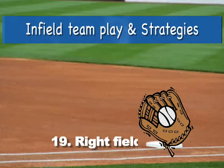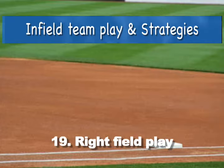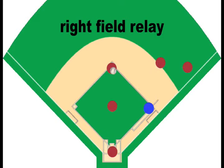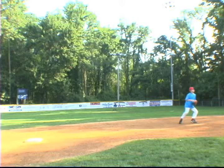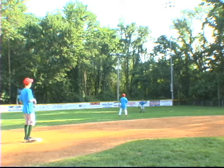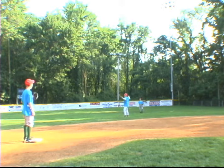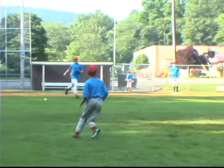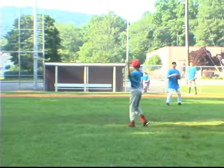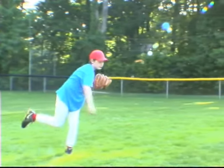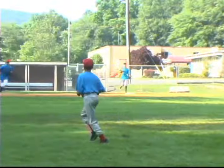Play nineteen: relay from second to shortstop. On a base hit to right field, the second baseman goes out to short right field. Just as the shortstop is responsible for retrieving the throw on hits to certain locations, so is the second baseman. If a ball is hit out into right or right center, he must go out and retrieve the throw from the outfield, turn to his glove side, and make the throw to the shortstop covering second base.